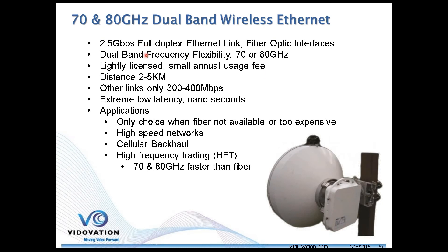The beauty of the 70 and 80 GHz is it's a dual-band radio. Basically it's a 70 gigahertz duplex circuit and an 80 gigahertz duplex circuit running together in the same housing. It is two channels, though, so we're aggregating the bandwidth over two pipes and need to do some load balancing through there.